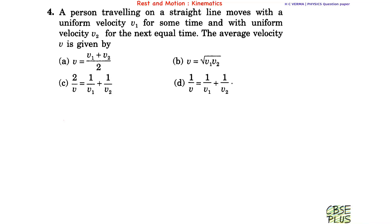Hi students, we are doing question 4. A person traveling on a straight line moves with a uniform velocity v1 for some time and with uniform velocity v2 for the next equal time. The average velocity V is given by — and we are given four options. So let us do this problem.